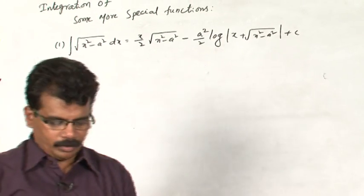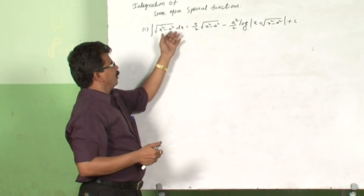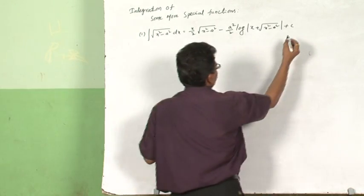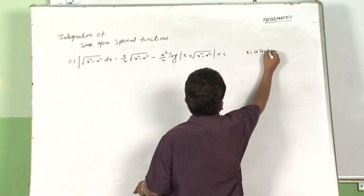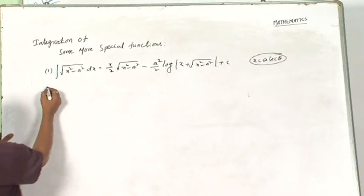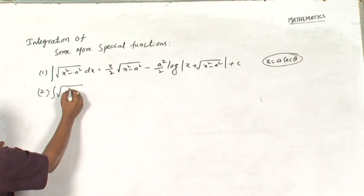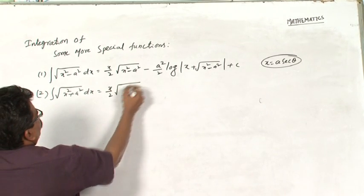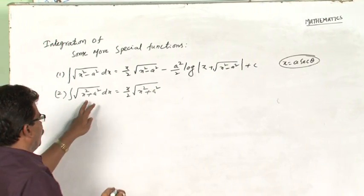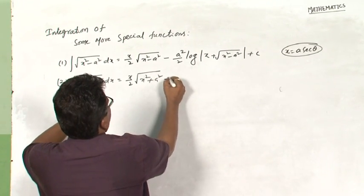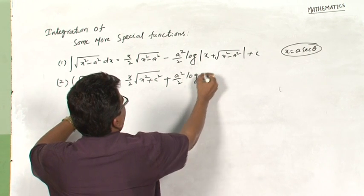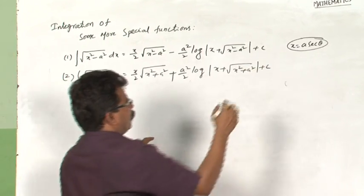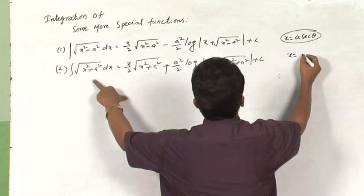I call these big formulas — the formulas are very big, the derivation also very big, but we can derive this formula very easily by assuming x equal to a secant theta. Similarly, the second one is integral root of x square plus a square dx. The formula for this integrand is: x by 2 times root of x square plus a square plus a square by 2 times log |x plus root of x square plus a square| plus c.